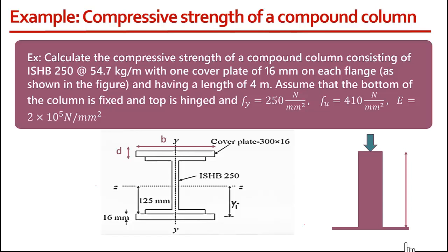Hello friends. In this video I will discuss a problem that will illustrate how you can calculate the compressive strength of a compound column. The problem says: calculate the compressive strength of a compound column consisting of ISHB 250 at 54.7 kg per meter with one cover plate of 16 mm on each flange as shown in the figure, having a length of 4 meters.